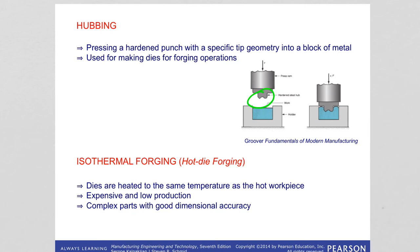Isothermal forging, also known as hot die forging, is a process where the dies are heated to the same temperature as the workpiece. Because the workpiece remains hot, its flow and ductility are maintained during forming, so the forging load is low and material flow within the die cavity is improved. Therefore complex parts with good dimensional accuracy can be obtained. The dies are usually made of nickel and molybdenum alloys because of their resistance to high temperatures, though the process is expensive.